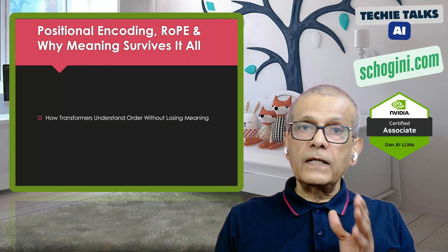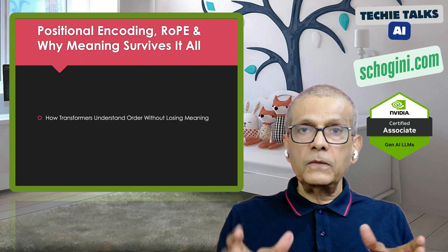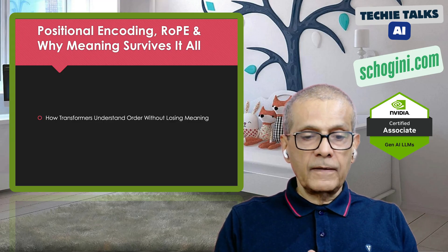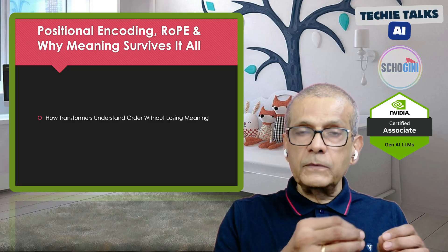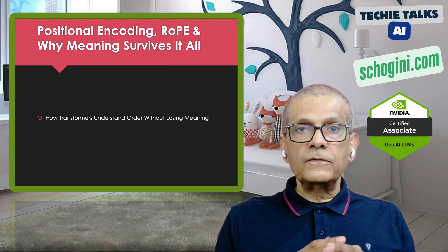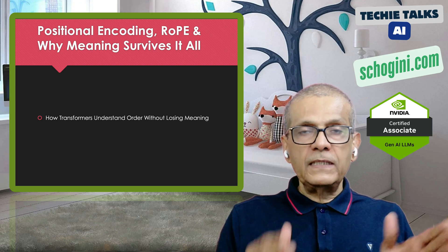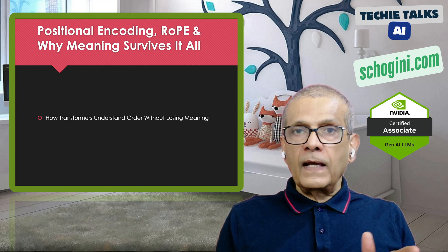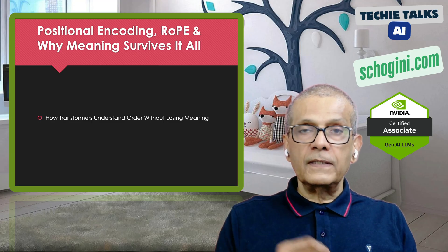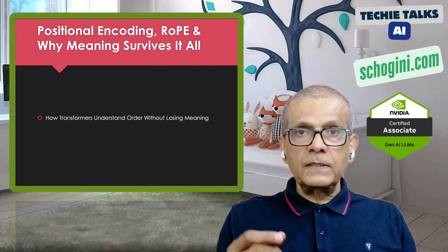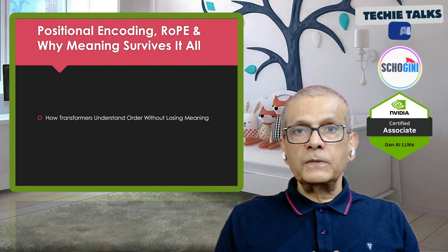How do transformers understand order without losing meaning? Transformer architecture revolutionized processing by handling information in parallel. For example, 'cat sat on a mat' — in RNN or LSTM, words enter sequentially, whereas in transformer architecture, the entire sequence is processed in parallel. So the moment it gets converted to subwords and embeddings, they all get processed together. There is no order, and in language, order is critical — otherwise we lose the meaning.